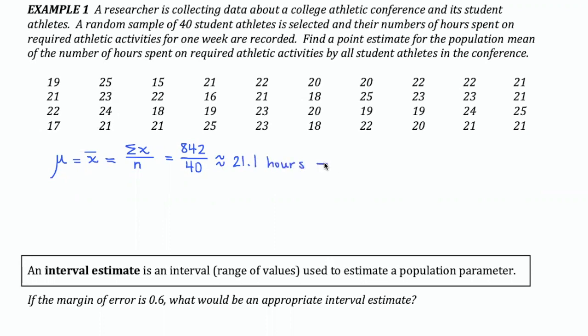This is referred to as a point estimate because it's a single number estimate for what the population mean is, and it's based on the sample mean. Now, realistically, the odds of the actual mean for the whole population being exactly this number are slim, but we hope it's going to be close.